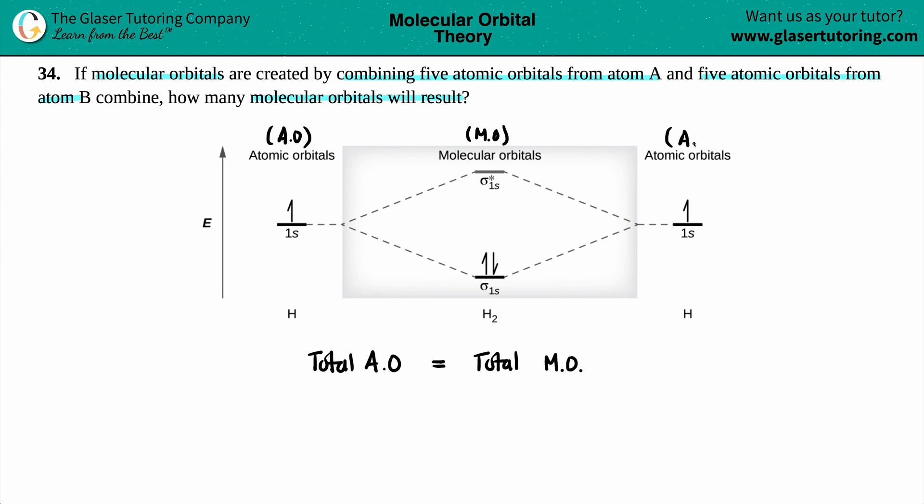So, as you can see here, when you have one atomic orbital from one atom coming in with one atomic orbital, just focus on the lines. Don't really focus on how many electrons there are. That's not for this question. But just know that I have one line here, that's one atomic orbital, I got another line here, that's two, and two total molecular orbitals are made, one and another one.